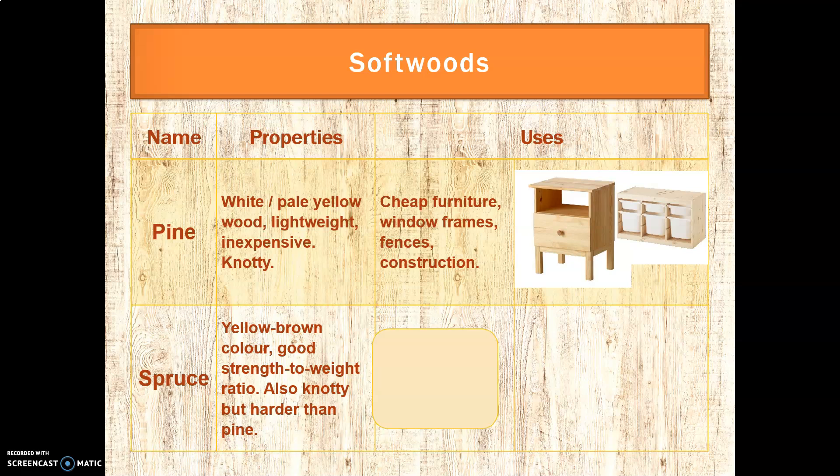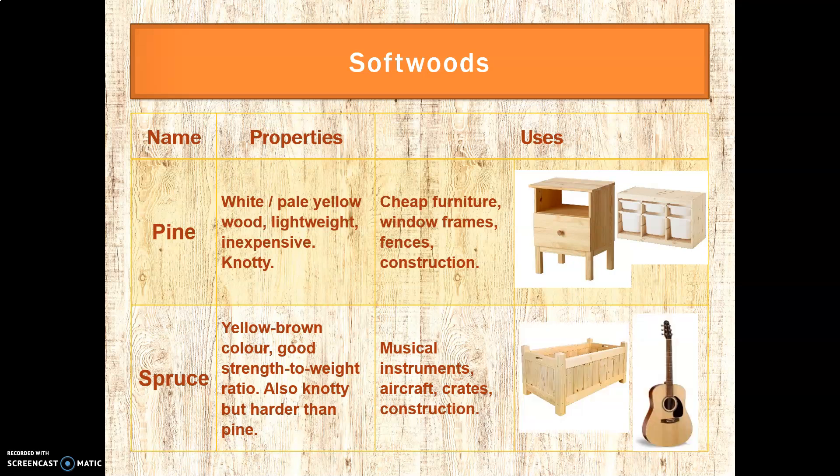Spruce is similar to pine as it grows in the same kind of climates. It's a yellow-brown colour and has a good strength-to-weight ratio. It's also knotty like pine but a bit harder, so it stands up to things a little better. It tends to be used for things like musical instruments, aircraft parts, crates, and construction.